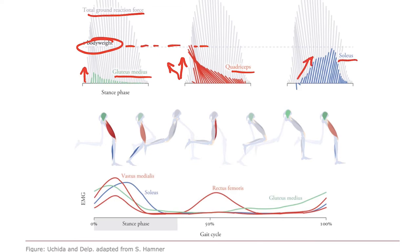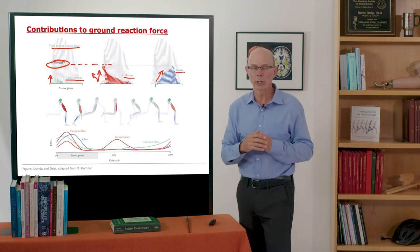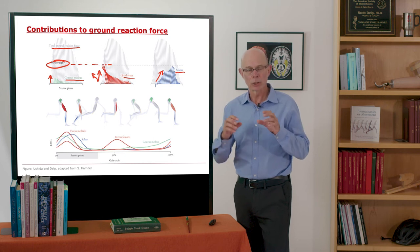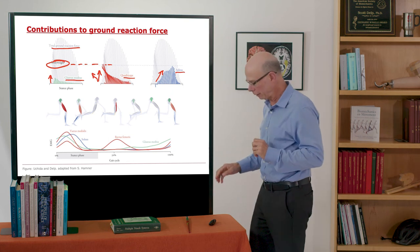Now because the stance phase is so short in running, these muscles have to come on at the same time. Remember, you're only on the ground for two to three tenths of a second. So these muscles all just come on, burst, generate those forces and propel you into the flight phase.